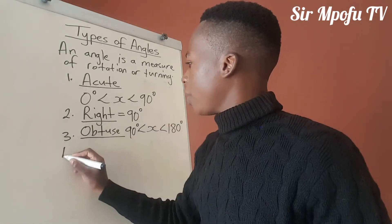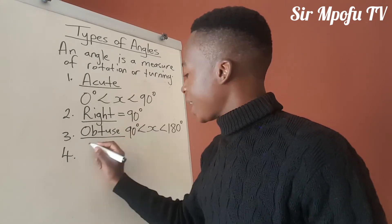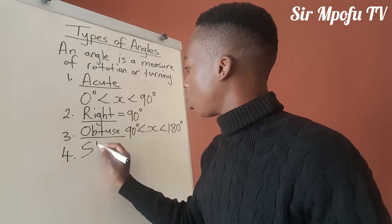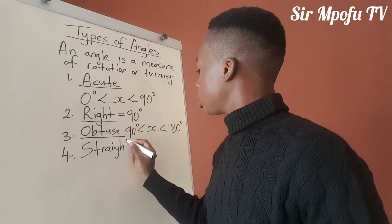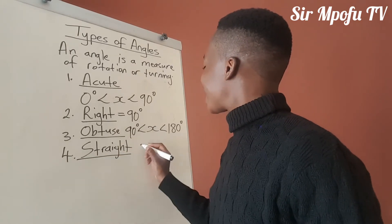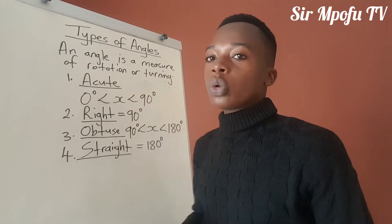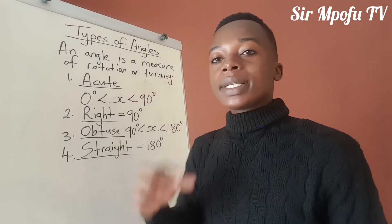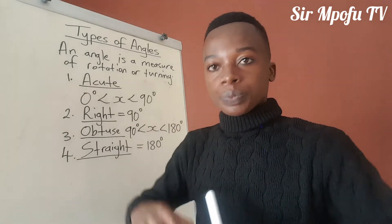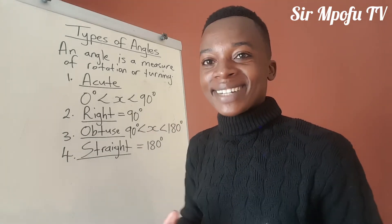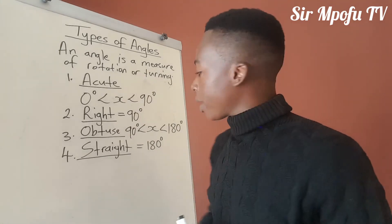Then we have got a straight angle. A straight angle is exactly 180 degrees. That is what we call a straight angle. Why is it called a straight angle? Because it is created by a straight line — that is why it is called a straight angle.